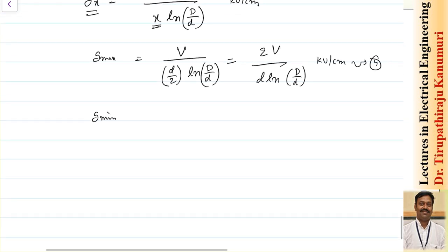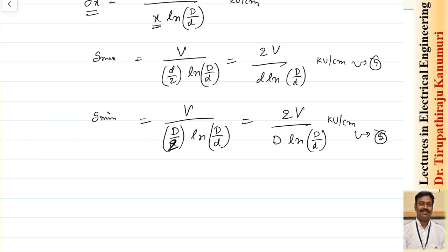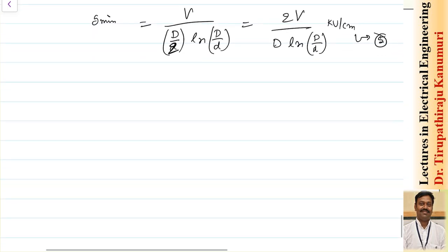Similarly, the minimum gradient occurs at the inner surface of the sheath (x = D/2): g_min = 2V / [D · ln(D/d)], in kV/cm. Let this be equation number 5. Taking the ratio g_max / g_min = D/d. Let this be equation number 6.